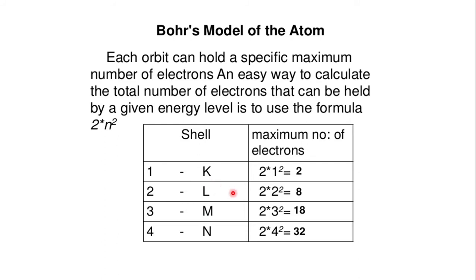The second rule is that the maximum number of electrons a shell or energy level can hold is given by the formula 2N², that is 2 into N squared, where N is the number of the energy level. The K shell is the first energy level so N = 1; L shell is the second so N = 2; M shell is the third so N = 3; and N shell is the fourth so N = 4.